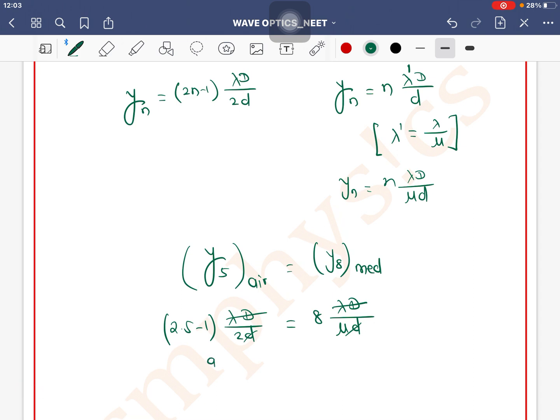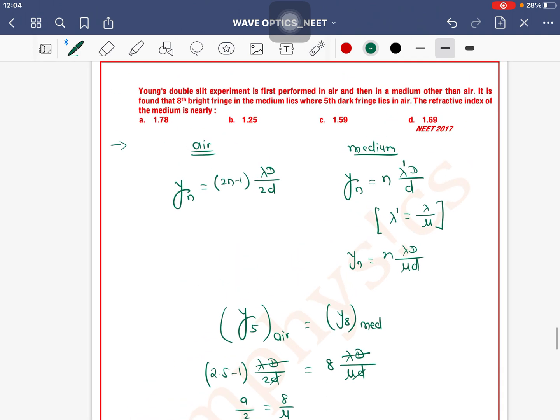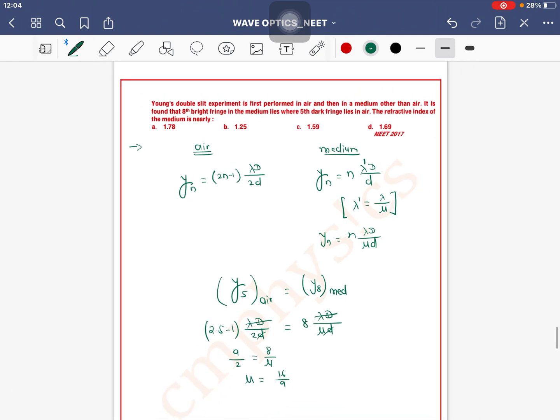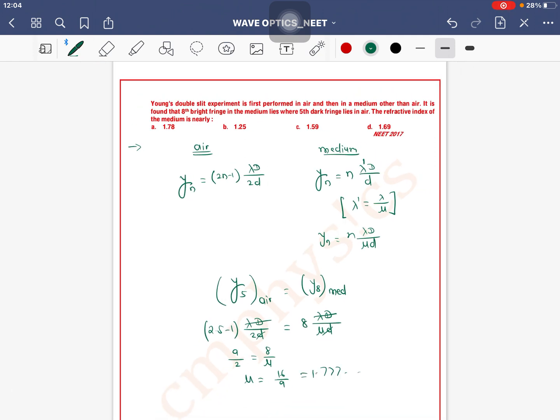2 into 5 is 10, 10 minus 1 is 9. So 9 divided by 2 is equal to 8 divided by mu. Mu value will be 16 by 9. 16 by 9 is 1.77 recurring, so the answer is 1.78, which is option A.